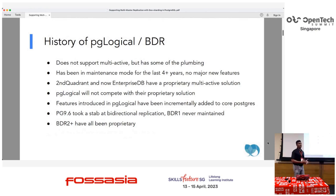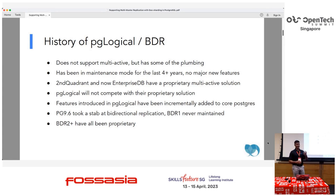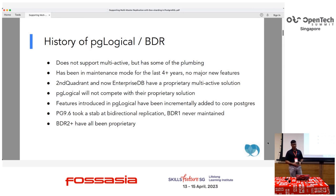Moving on to multi-master replication — what was the history behind multi-master and multi-active systems in the Postgres ecosystem? We had one based off of 9.4 and 9.6, which was BDR-1, the first version of bi-directional replication. BDR stands for bi-directional replication. Second Quadrant and now EDB have something called Postgres Distributed, another bi-directional slash multi-master replication solution. After BDR-1, there was BDR-2 and BDR-3, which were proprietary/closed source.